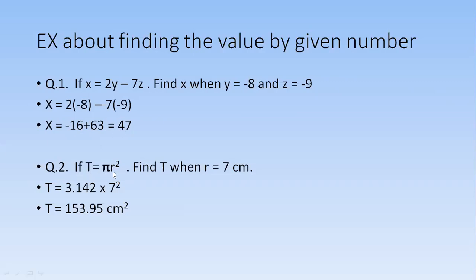In example number two, T is equal to πr². This is the question. You need to calculate T. So the value of r is given. You need to put the value of r in this expression. π is 22 upon 7. You can take π as 22 upon 7 or 3.142.